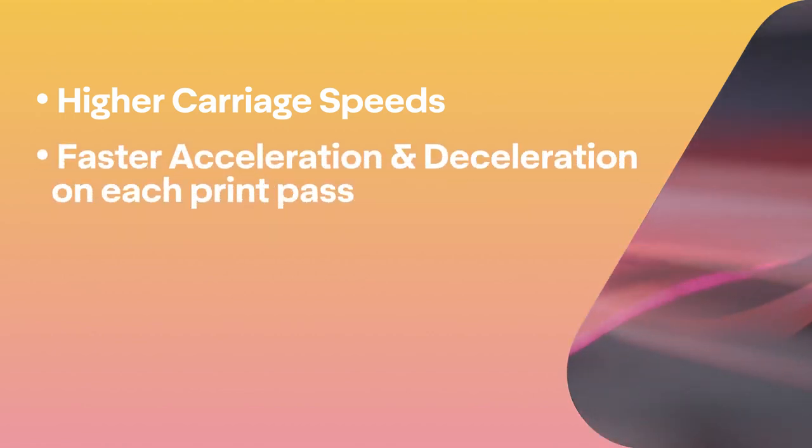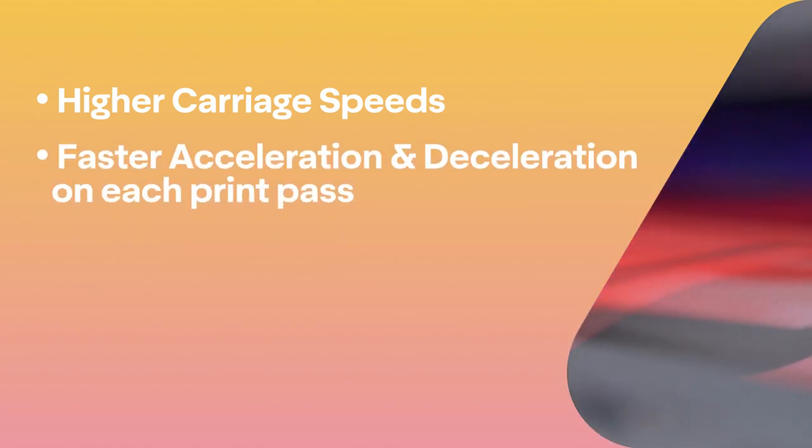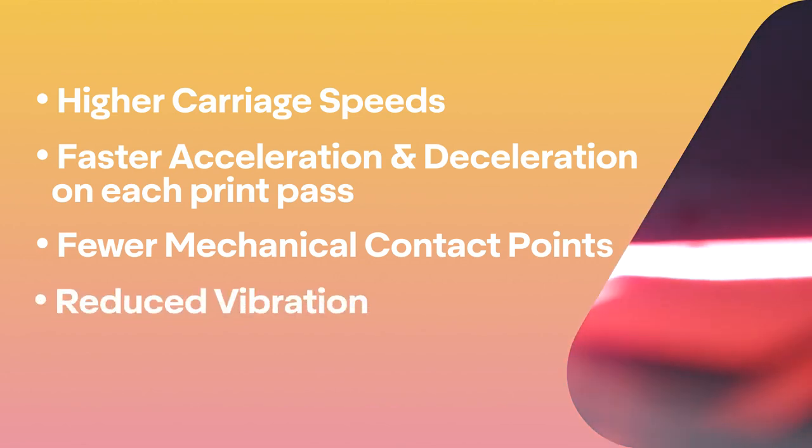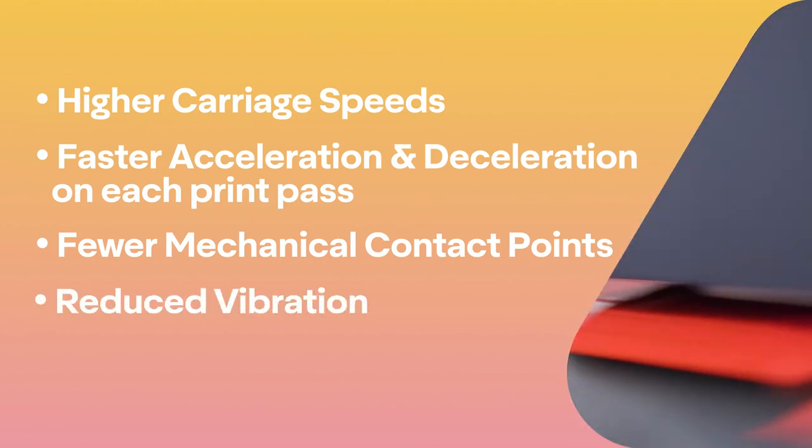For the magnetic linear drive, the back rail is a series of magnets and there is a corresponding set of magnets on the back of the carriage that flips polarity to drive the carriage back and forth. This results in higher carriage speeds, faster acceleration and deceleration each print pass, fewer mechanical contact points, and reduced vibration resulting in more accurate printing.